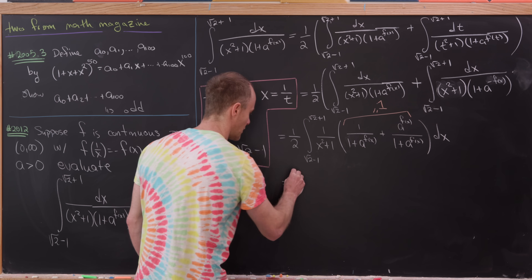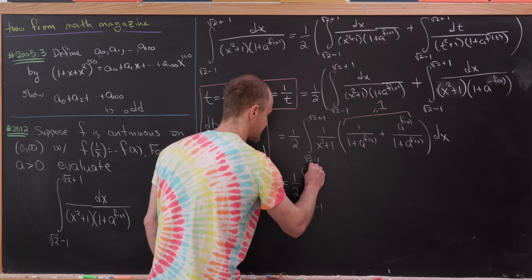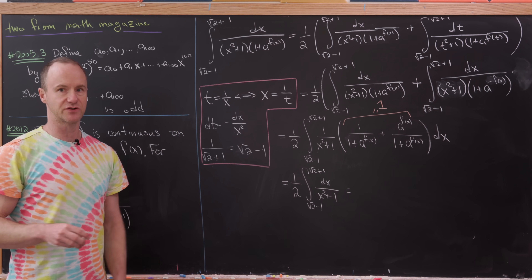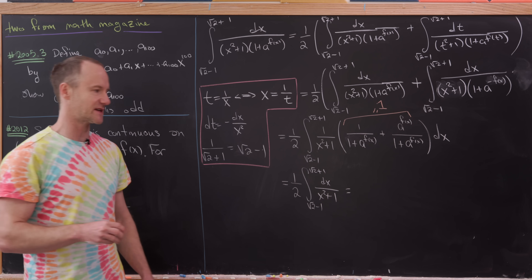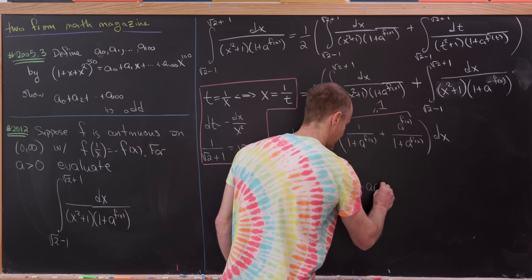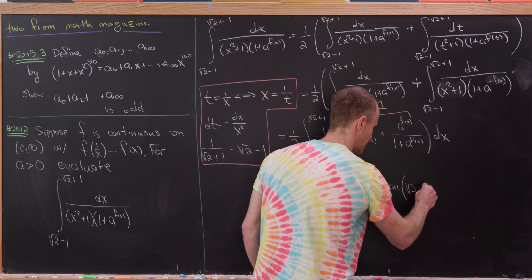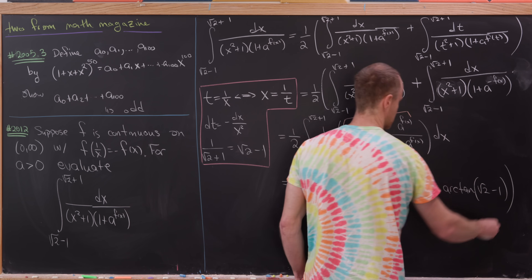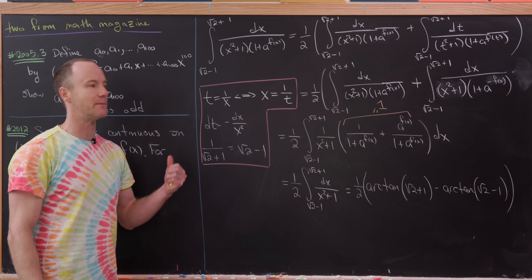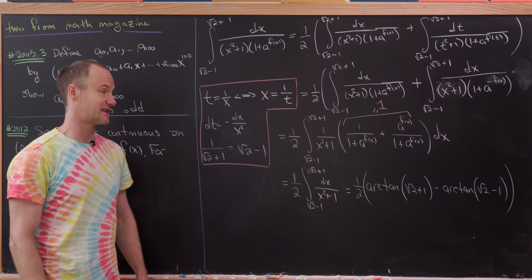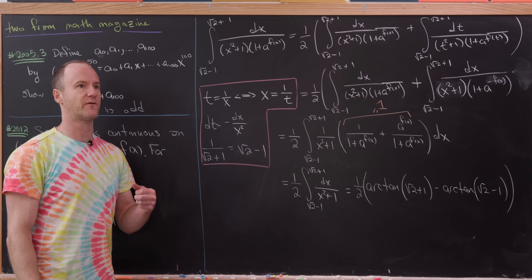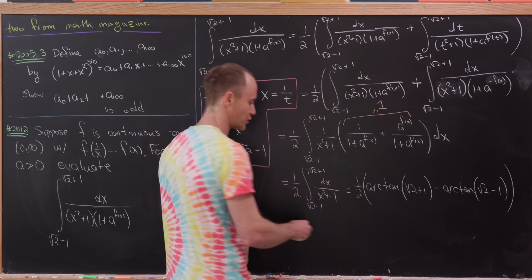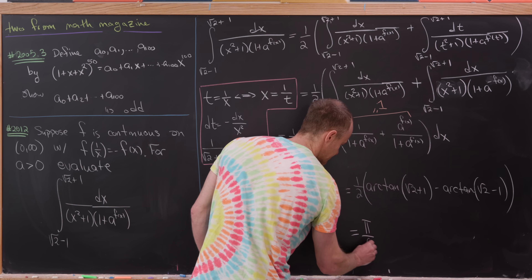So we end up with one half times the integral from √2 − 1 to √2 + 1 of dx/(x² + 1). The antiderivative of 1/(x² + 1) is arctan, so we get (1/2)·[arctan(√2 + 1) − arctan(√2 − 1)]. Using the angle sum formula for tangent — rewritten as a sum formula for arctan — the answer works out to π/8, which is (1/2)·(π/4).